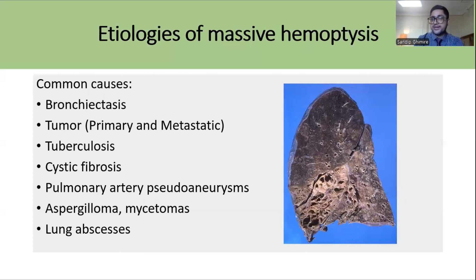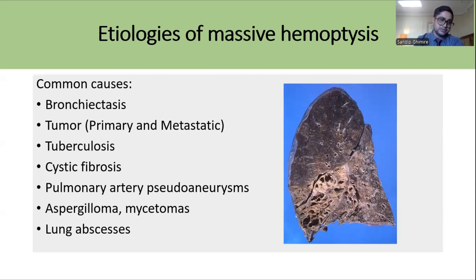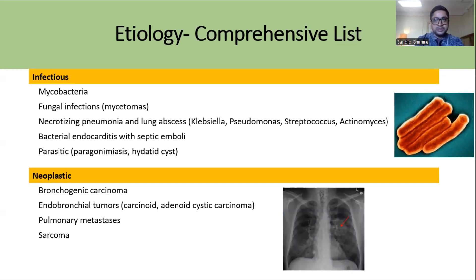The most common cause of Massive Hemoptysis is bronchial disease. Previously tuberculosis was the leading cause globally, and it remains the most common cause of hemoptysis in countries like China and some other low-income countries. Other causes include tumors, which could be primary or metastatic, cystic fibrosis, pulmonary artery pseudoaneurysms, aspergillomas or mycetomas, and lung abscesses.